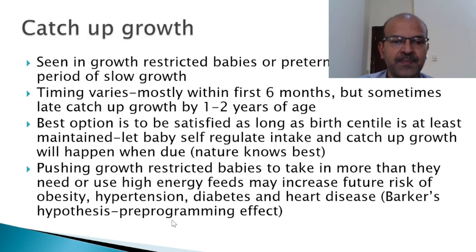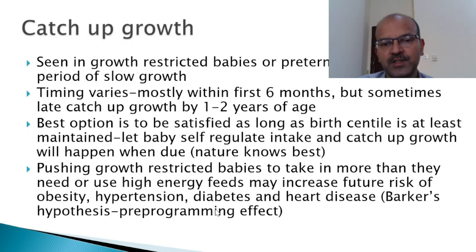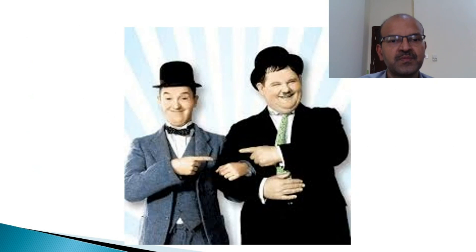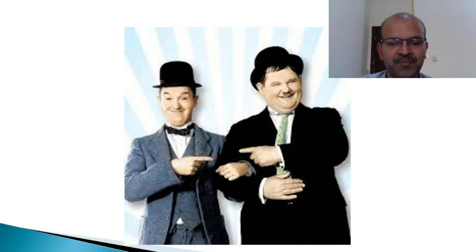Pushing growth-restricted babies to take in more than they need or to use high-energy feeds may increase the future risk of obesity, hypertension, diabetes, and heart disease. This is called Barker's hypothesis or the pre-programming effect. A child who is destined to be small — if you force them to grow faster — it is not good for their cardiovascular health. If a child is meant to be smaller, forcing rapid growth is not beneficial.